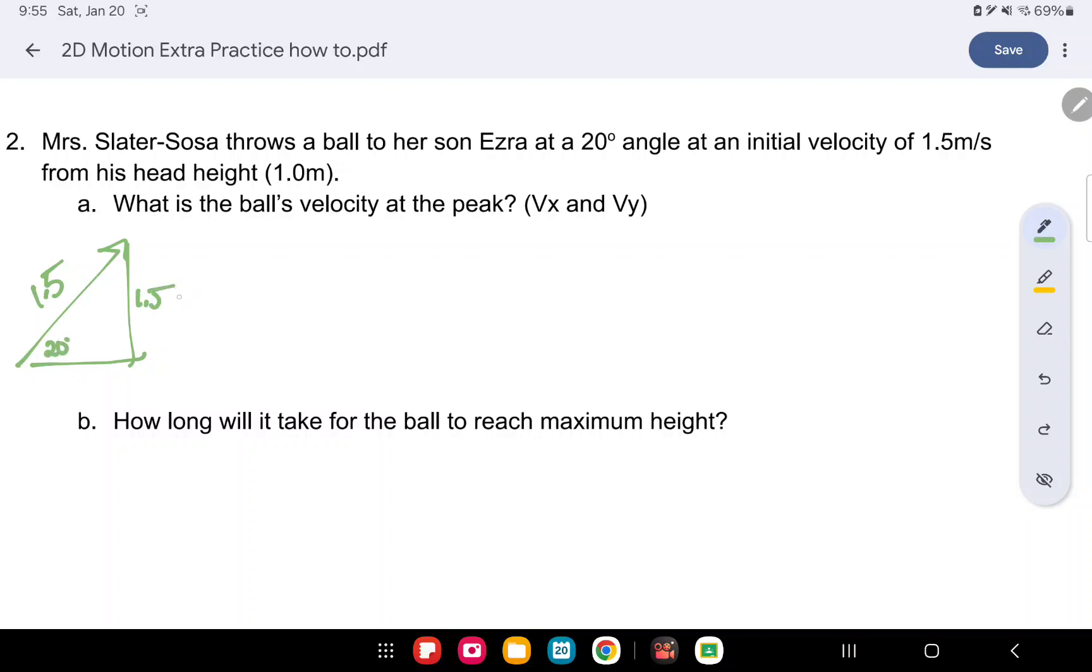So we do 1.5 sine 20 and 1.5 cos 20. Plug those in a calculator to get your initial velocities in your x and y directions. So 1.5 times cos of 20 is 1.41 meters per second and 1.5 times sine of 20 is 0.51 meters per second.